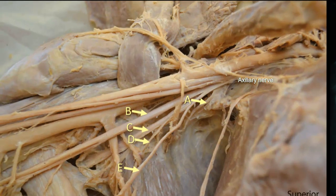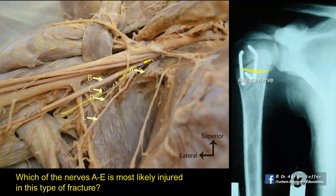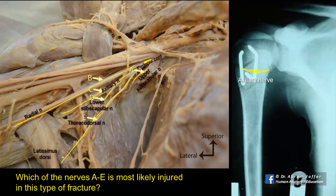Now let's look at the dissection. The axillary nerve and the radial nerve are the two terminal branches of the posterior cord of the brachial plexus. The axillary nerve is a large nerve that leaves the axilla by passing through the quadrangular space in the posterior wall, very close to the lower part of the shoulder joint. The radial nerve, the larger branch, passes straight down to the arm. The other three branches are small: the upper subscapular, lower subscapular — which supply subscapularis — and a medium-sized branch supplying latissimus dorsi. So the answer is C, the axillary nerve.